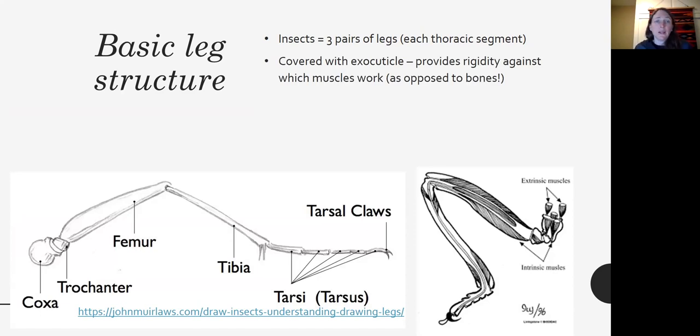The leg is covered with an exocutical, which provides the rigidity against which muscles work, as opposed to in our bodies, that rigidity is provided by our bones. So the rigid parts are on the outside, which is what makes insects interesting.